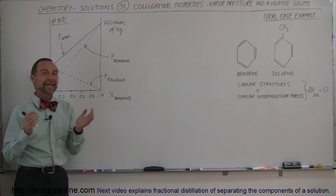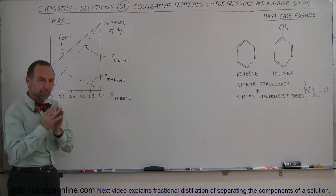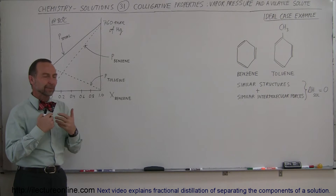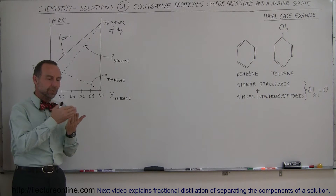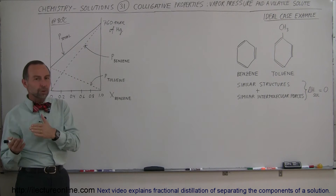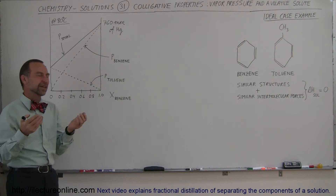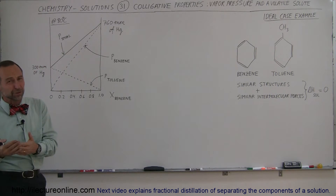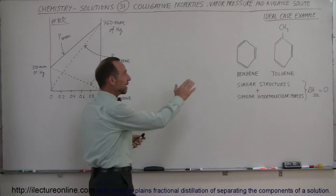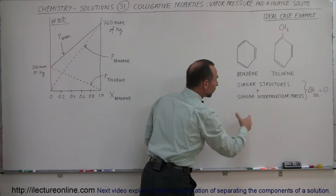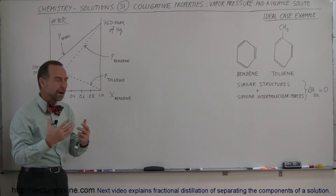Now we're going to take a look at a case where we take two solutions and put them together, and we have what we call an ideal case, where the properties of both solutes and solvent are very similar. In this case, it's hard to determine which one is a solute and which one is a solvent. Let's take benzene and toluene, for example. They're very similar in structure and very similar in properties.